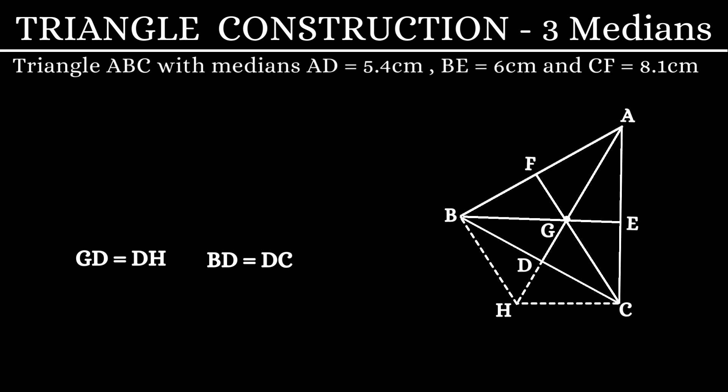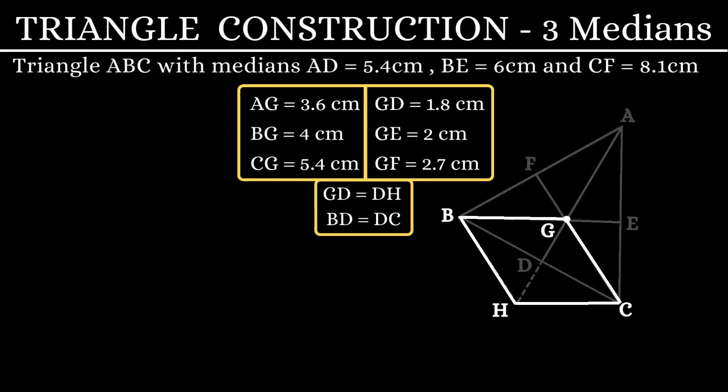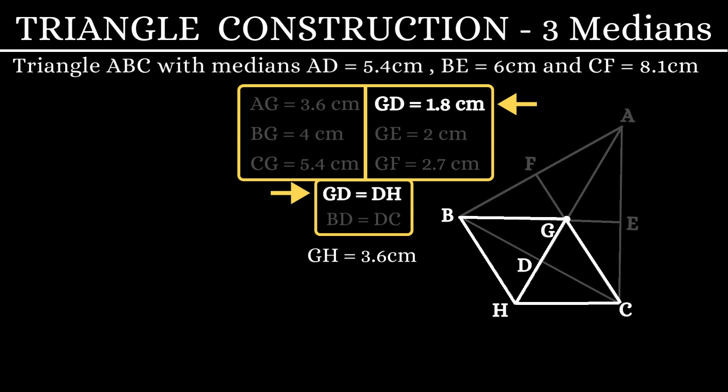We will start the construction by first constructing the parallelogram. Before that, let us mark the dimensions. BH is equal to CG which is 5.4 cm. HC is equal to BG which is 4.4 cm. The diagonal GH is equal to 3.6 cm. That is because GD and DH are both 1.8 cm, so adding up these two, we get the dimension of the diagonal.